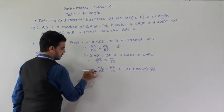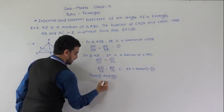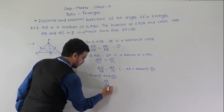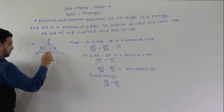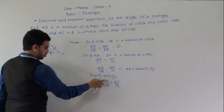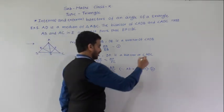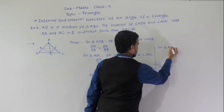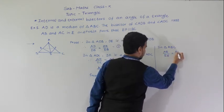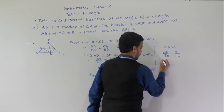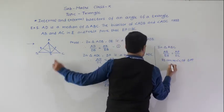From equations 1 and 2, since DB = DC, both left-hand sides are equal. Therefore AE/EB = AF/FC. Considering triangle ABC, since AE/EB = AF/FC, by the converse of the Basic Proportionality Theorem, EF is parallel to BC.